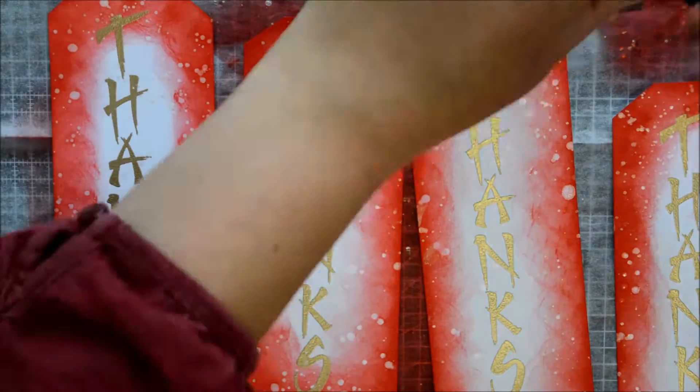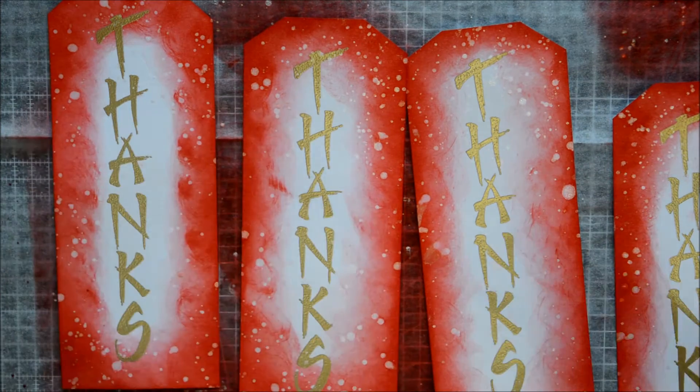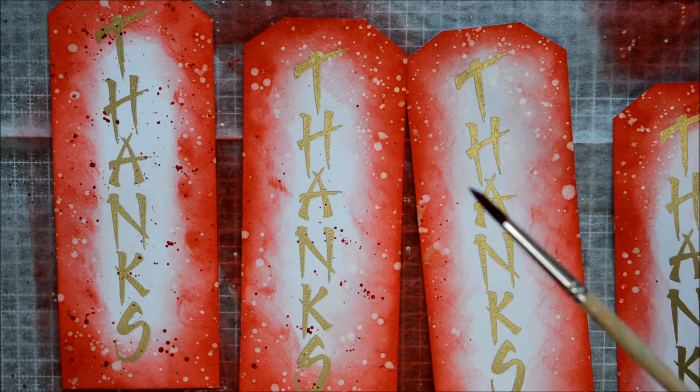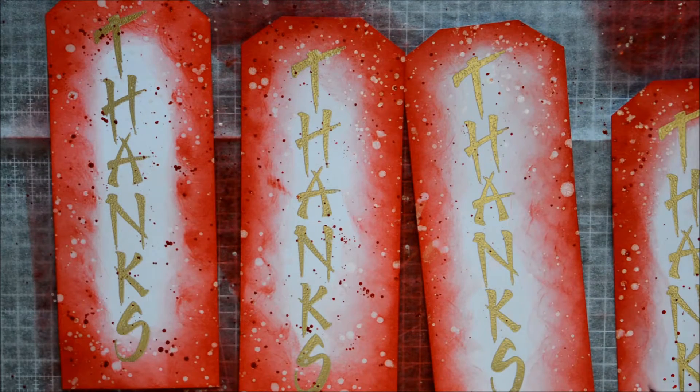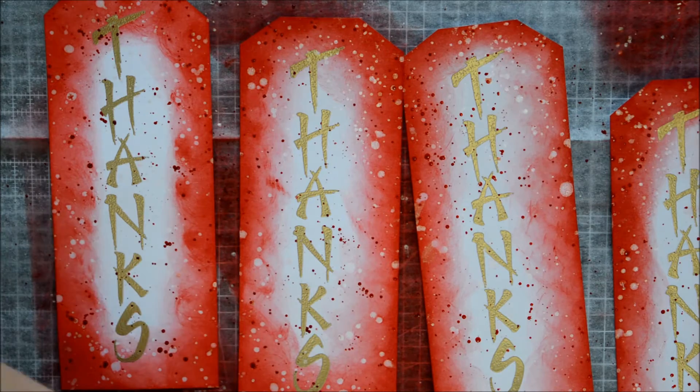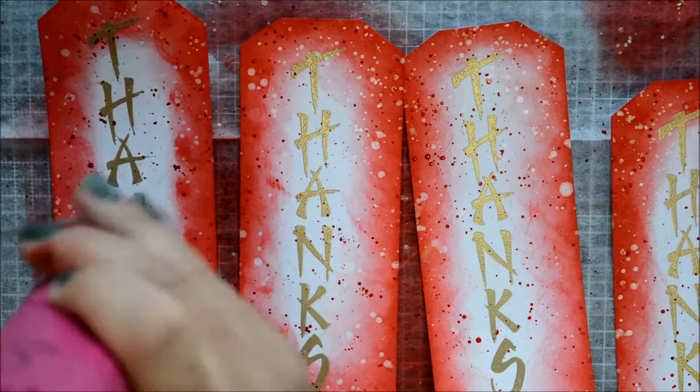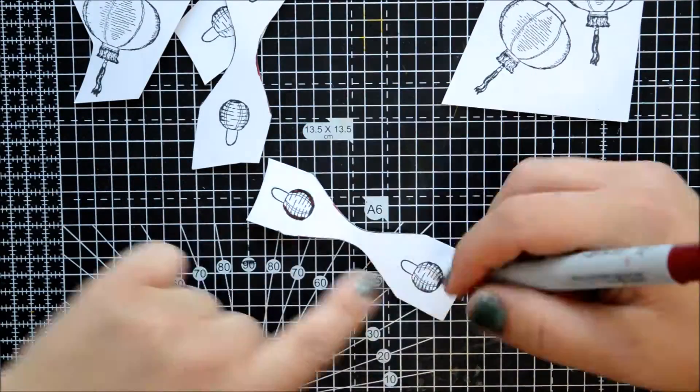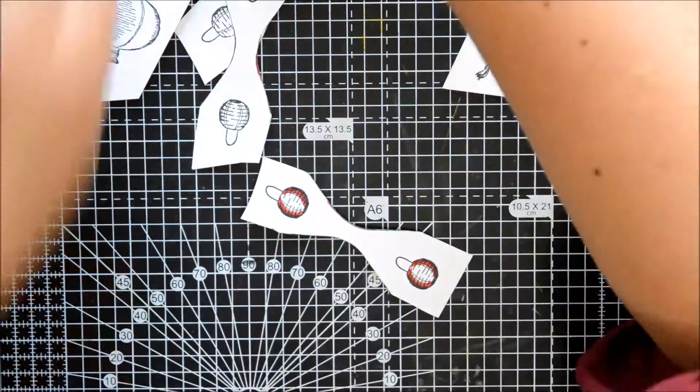Once I was done with that, I mixed a bit of Distress ink with some water, not too much so it stays really deep, and then I splattered it all around. Because I didn't put much water, it didn't dry quickly at all. If you want it to dry quickly, put more water. Don't use your heat gun too much because you will re-melt your embossing powder and it will look funny.